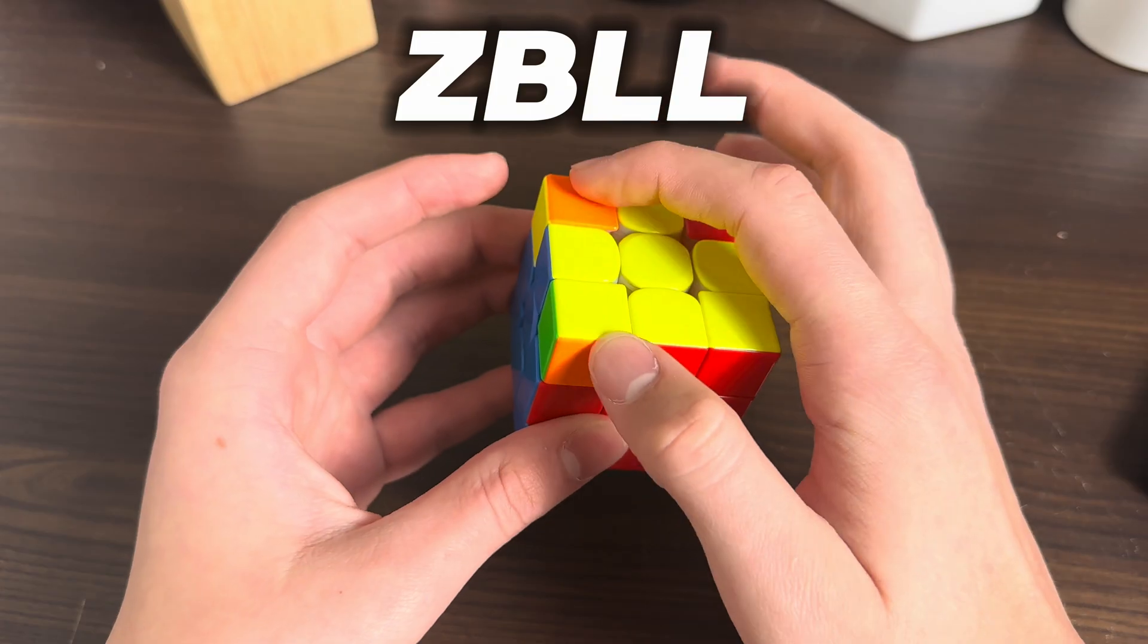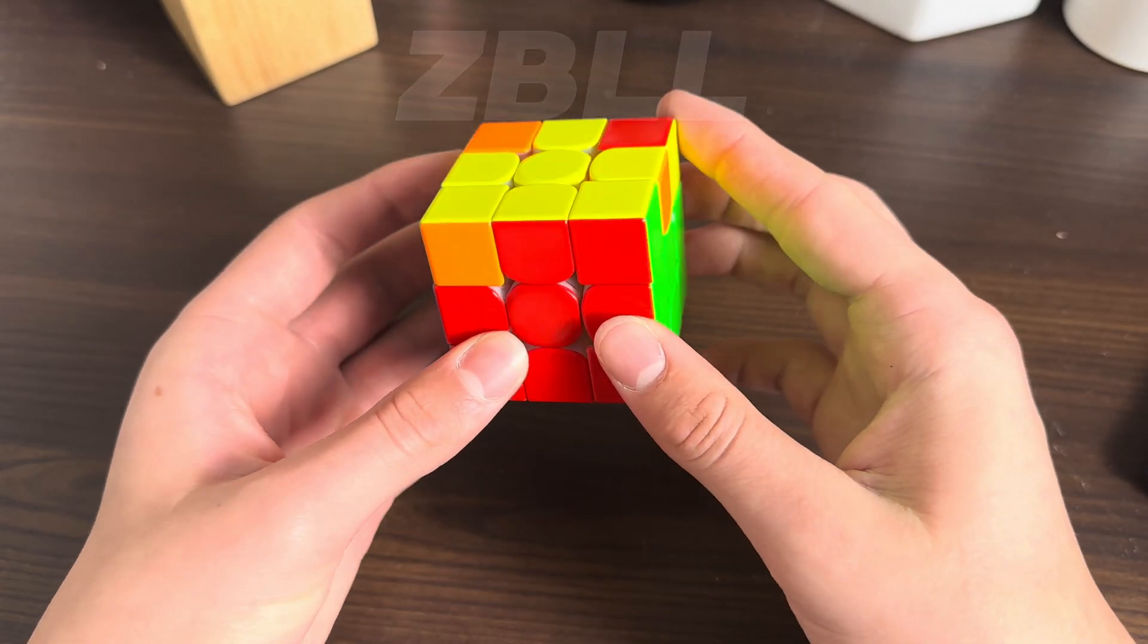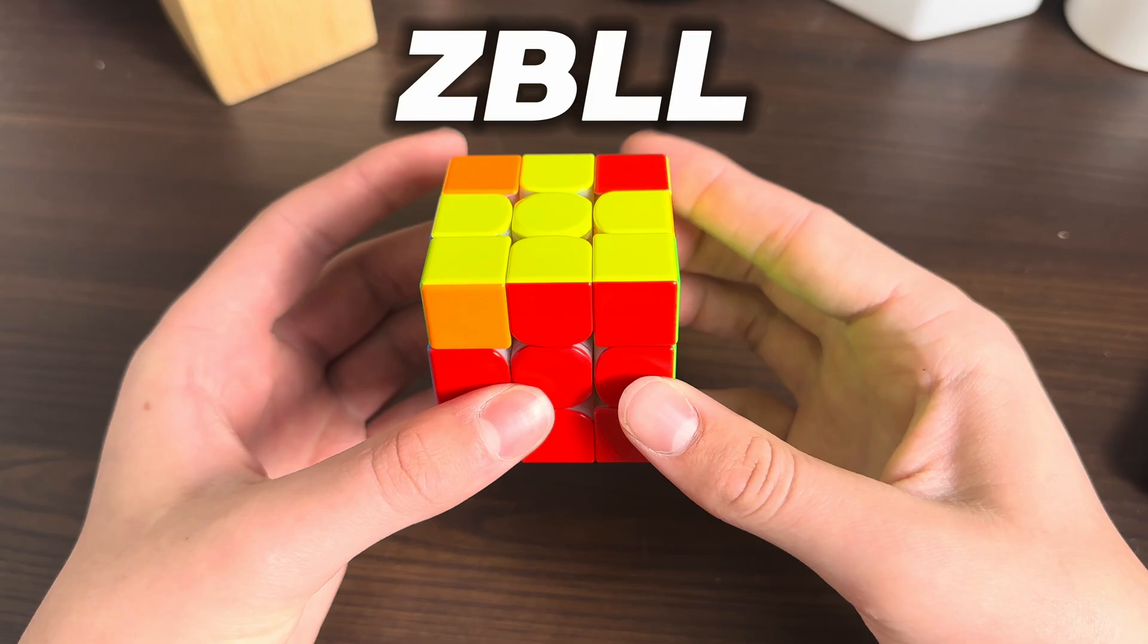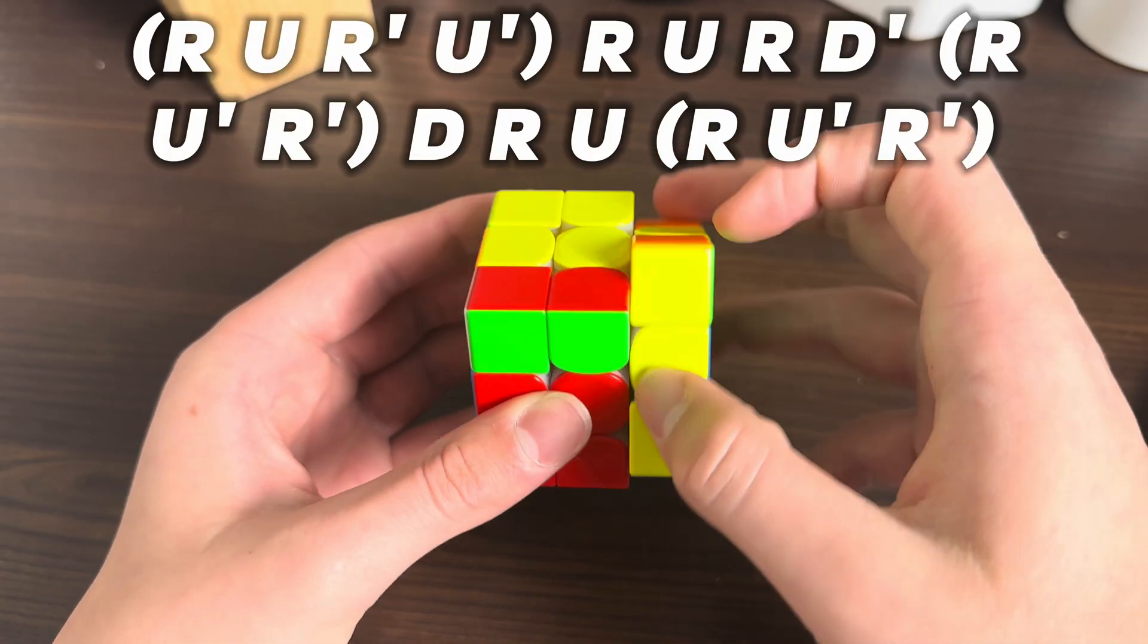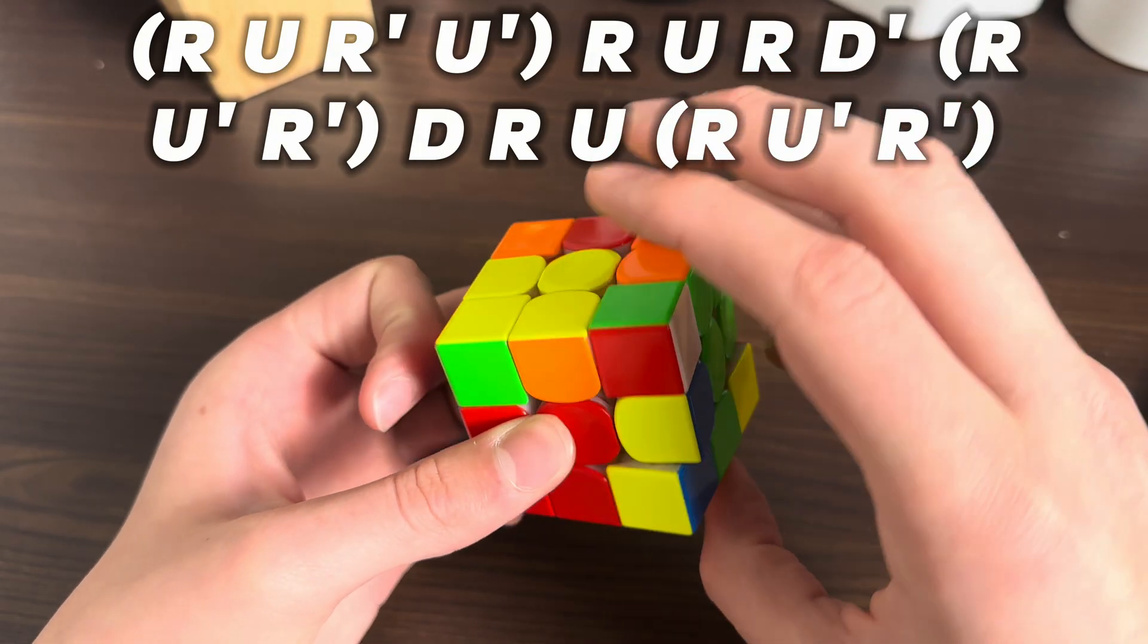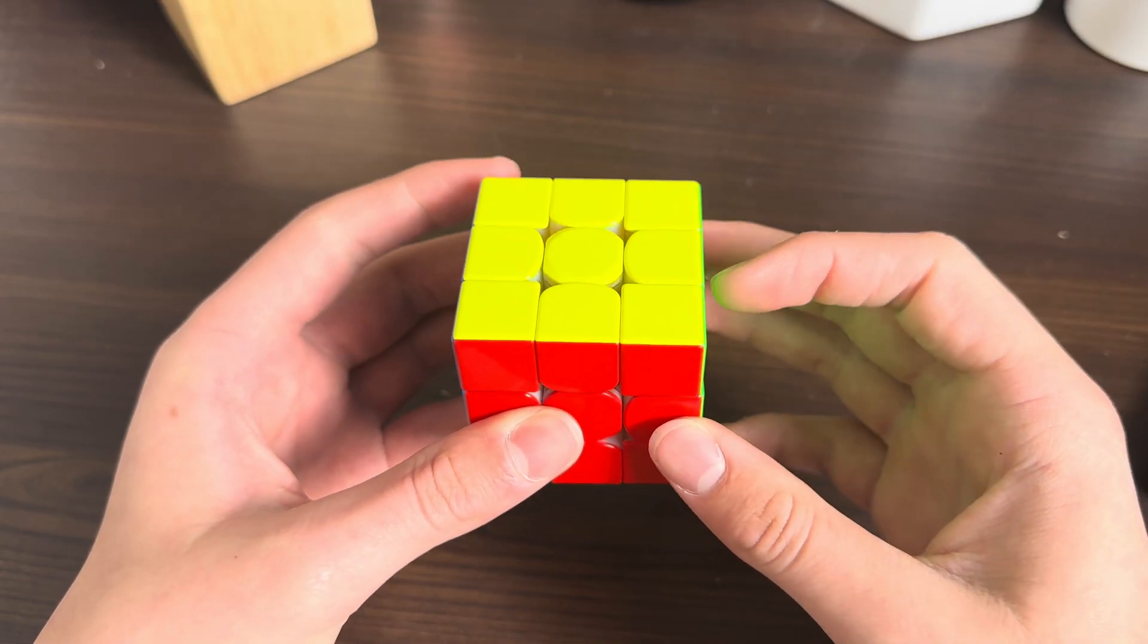This one, these two match, these two match, and these two are opposites. You got a block and these two are adjacent. From here I do U and then go into the algorithm which goes like this, and that solves the cube.